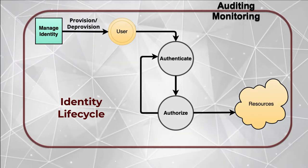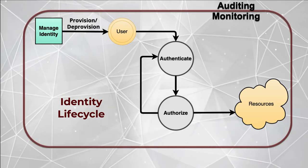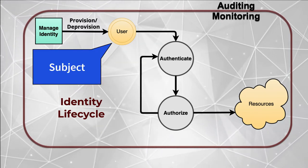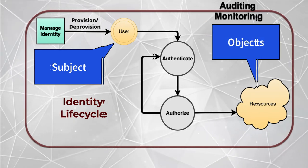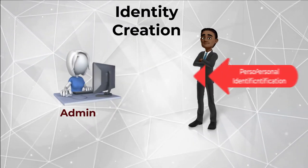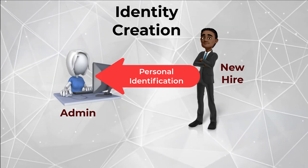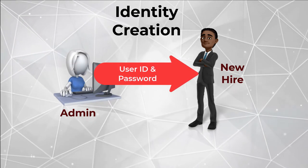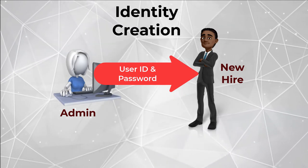An identity defines an entity — human, device, or process. In the identity management process, we call these entities that access resources 'subjects.' The resources they access are called 'objects.' When a new subject needs to access one or more objects, an administrator creates a secure means of verifying the subject's identity, beginning with assigning it a user ID coupled with one or more authentication factors. The most common factor is something the identity knows, like a password.